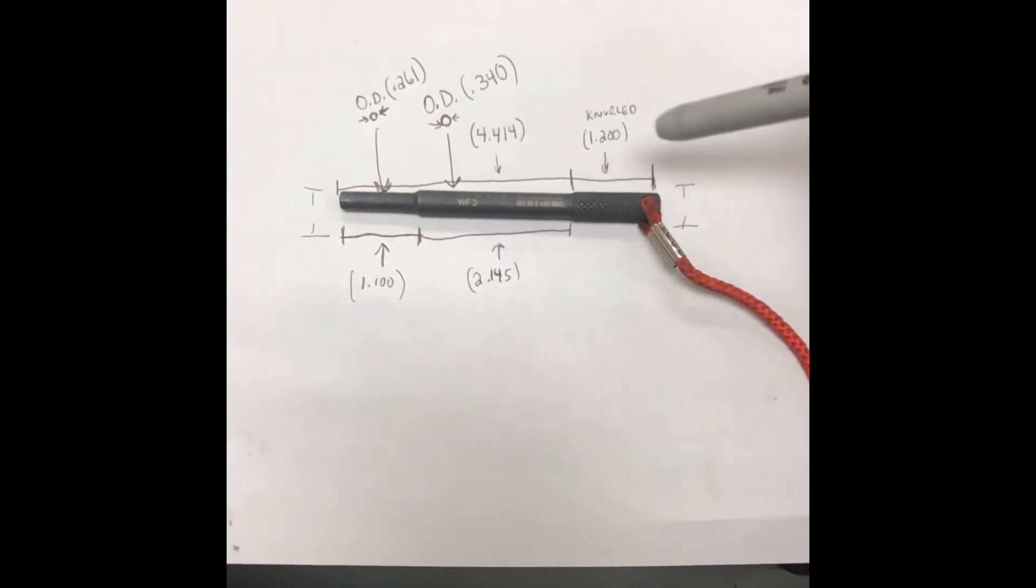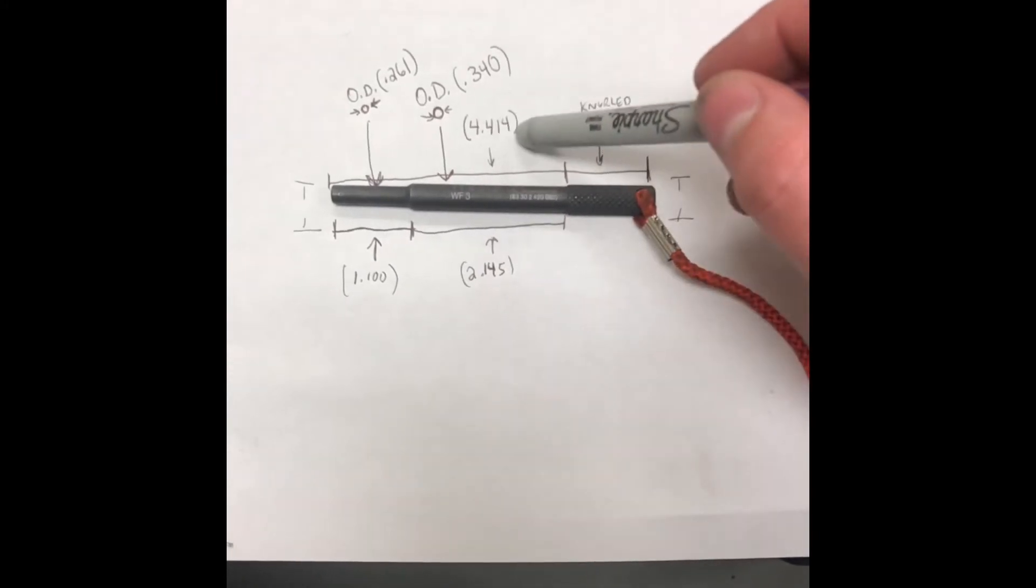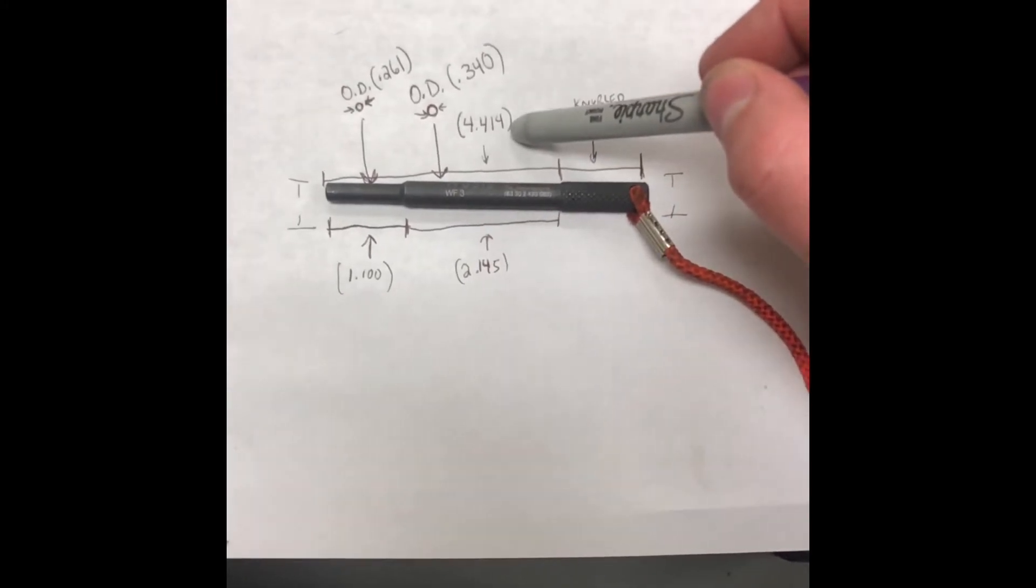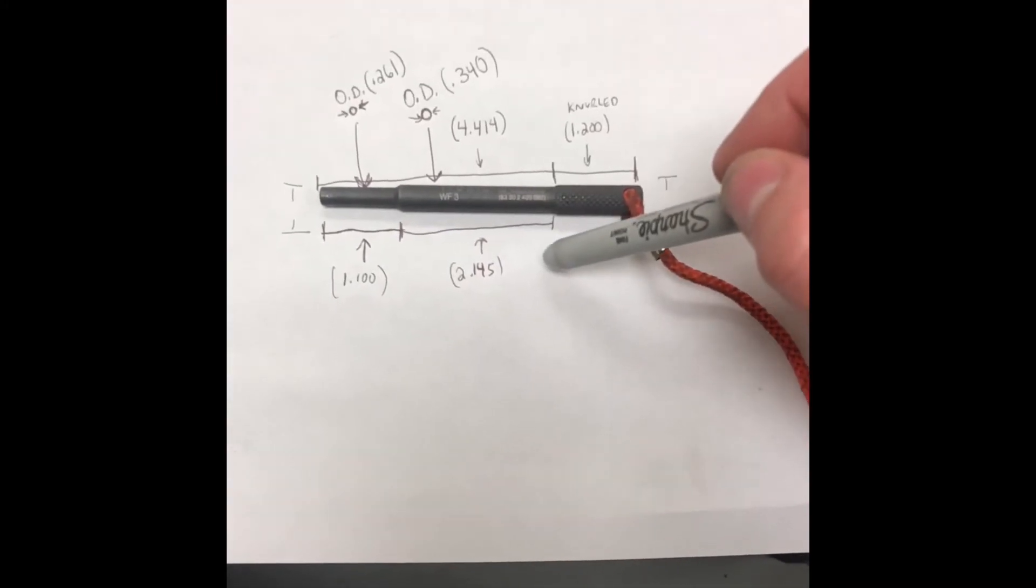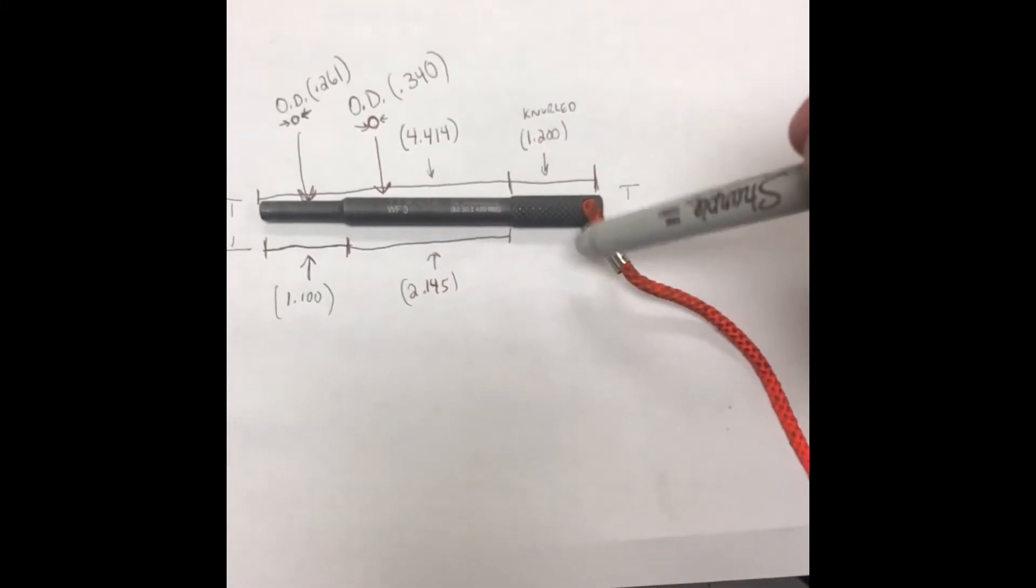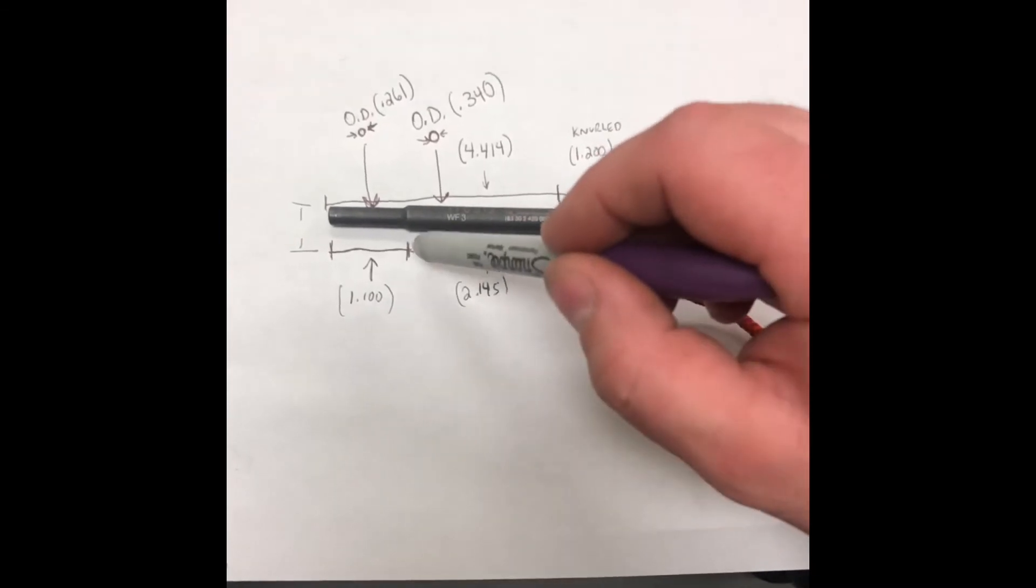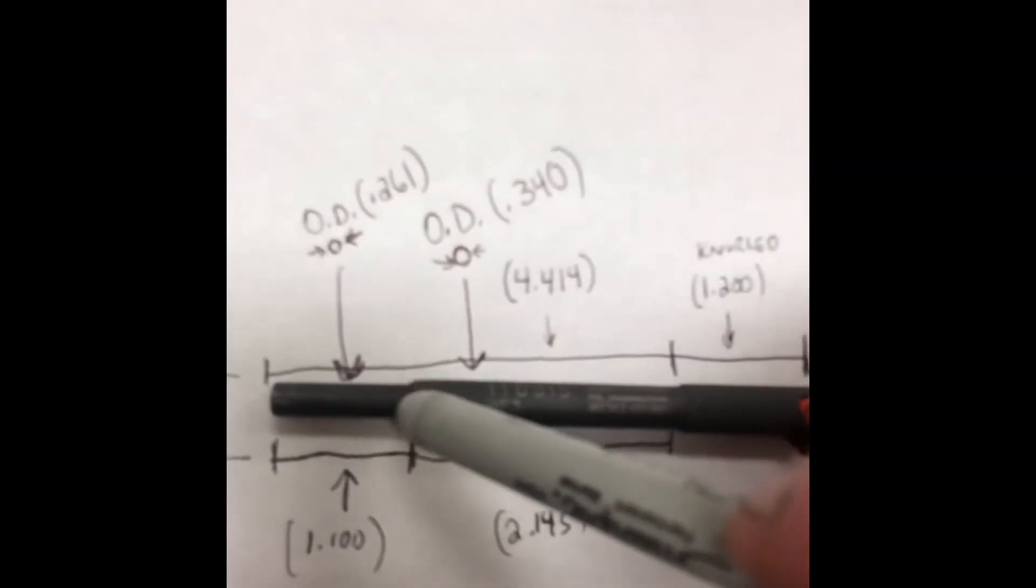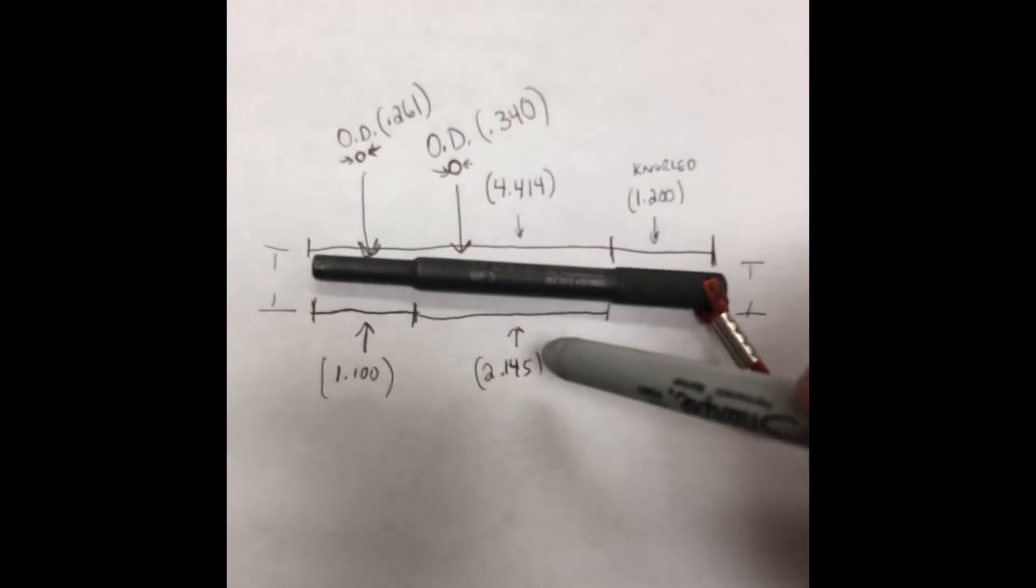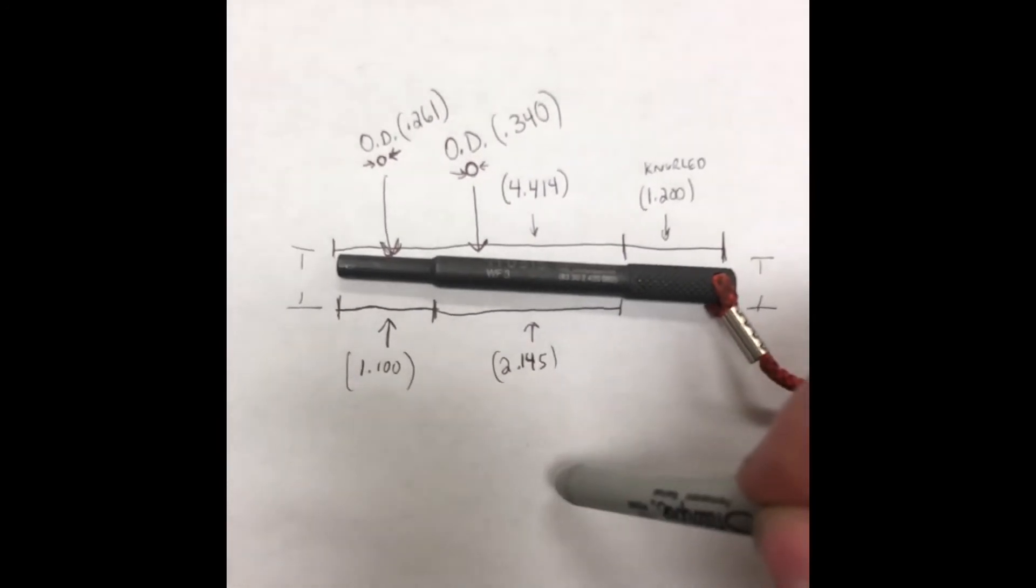Alrighty, so here is the BMW special tool. Overall length is 4 and 414 thousandths. The knurled portion on the end here is 1 and 200 thousandths. From the knurled portion to the tapered portion, the start of the taper right here, is 2 and 145 thousandths.